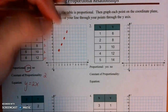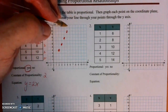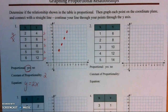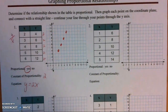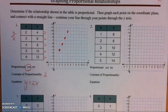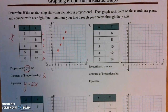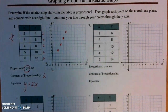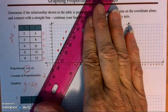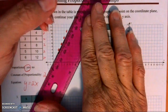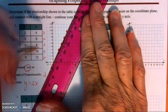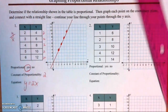Then (5, 10). You don't have 12 on your graph — my paper is a little different than yours, so it's fine to stop there. Get your ruler, line it up with the points, and draw a line.